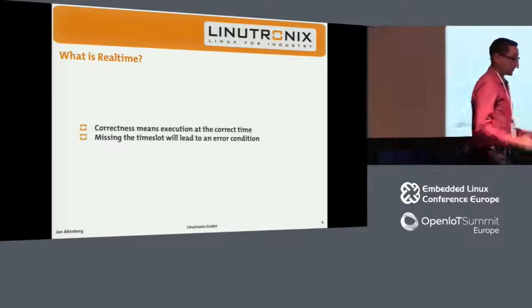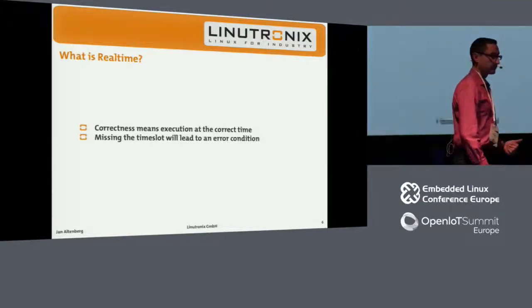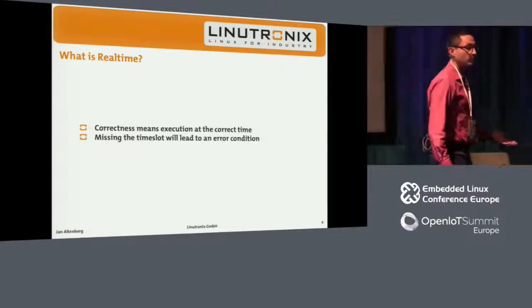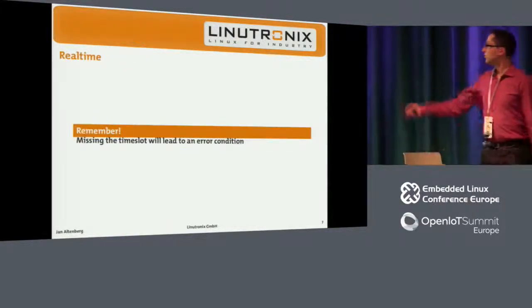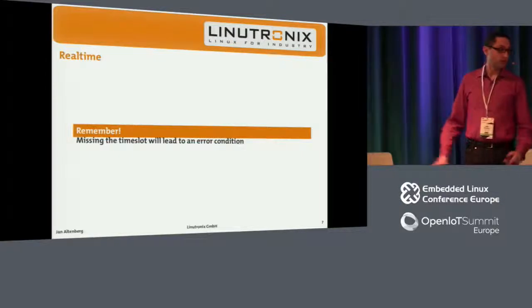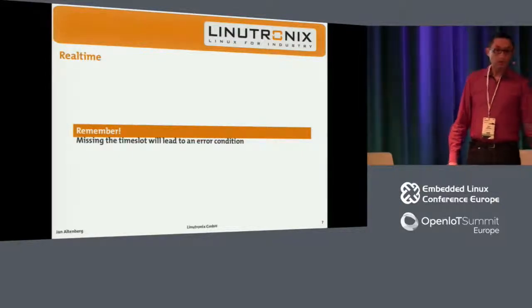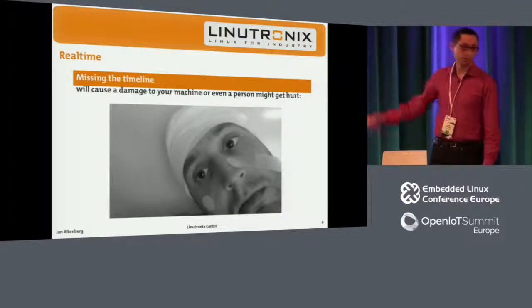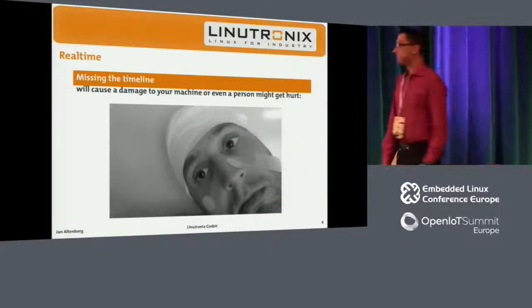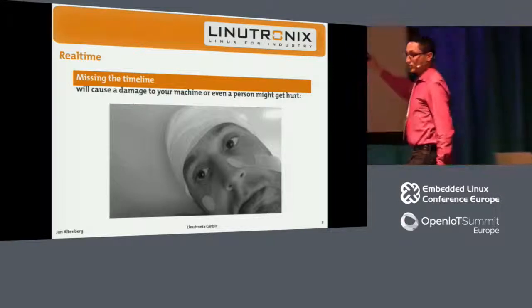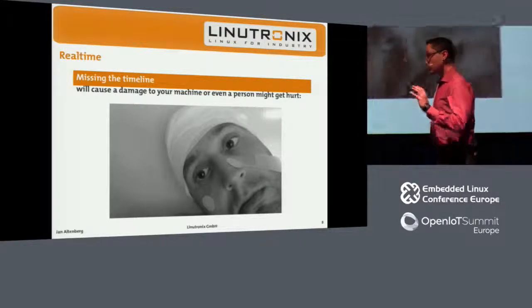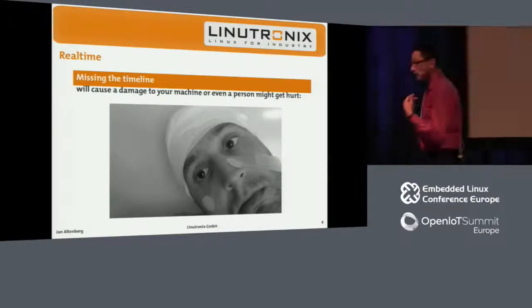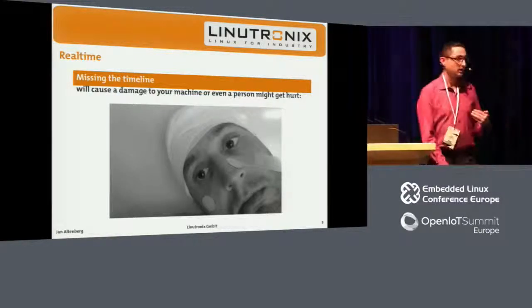This error condition in the real-world example might mean the product you're trying to manufacture is broken. Your machine will break or something. So missing the time slot will lead to some error condition. And the worst-case situation would be that if you miss the time frame, someone would get hurt. If you get into that situation where the machine gets broken or your product or someone gets hurt, this is basically the moment where you need to think about real-time requirements.